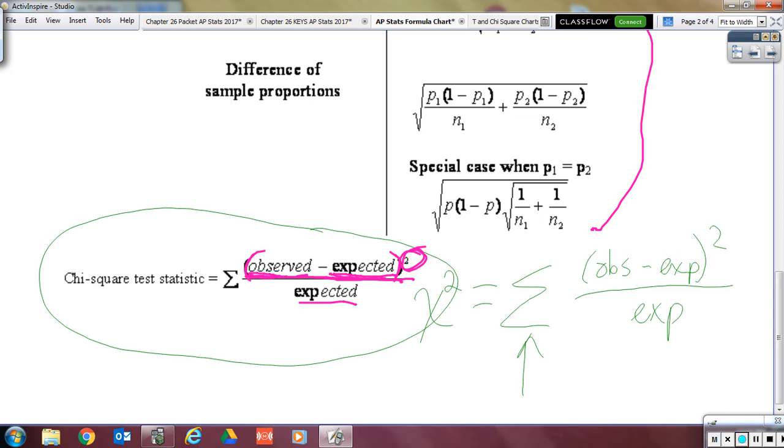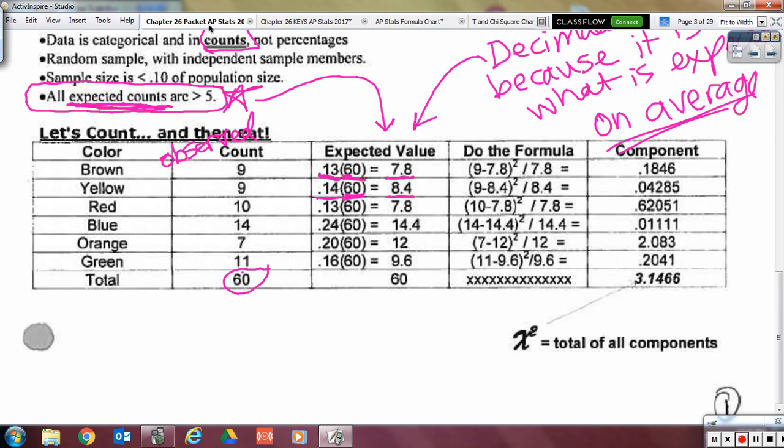For each color, you will do observed minus expected quantity squared divided by that expected value. That's for one component. Then, to get the entire chi-squared test statistic, what am I going to do with all six of those components? Sum them up. So I'm going to do observed minus expected quantity squared divided by expected, and I get that particular color's component or discrepancy. I'm going to do that for all six colors, and then sum those up to get the total chi-squared value. Let me give you a few moments to do that, and then we'll have a discussion about your numbers.